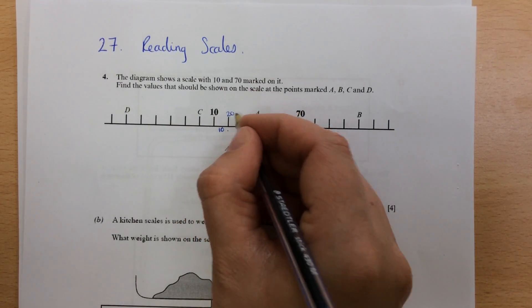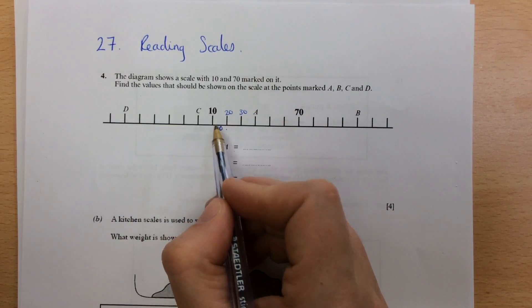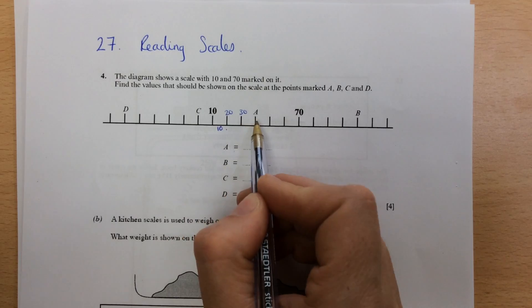So we know that's going to be 20 and 30 and so on. So we can find A. So we're going 10, 20, 30, 40.